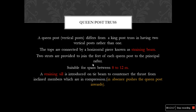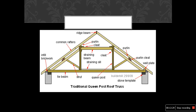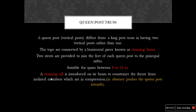Queen post trusses differ from king post trusses in having two vertical posts rather than one. Instead of one king post and strut connecting the rafter, there is a vertical and horizontal member — the vertical member is called the queen post and the horizontal member is called the straining beam. The queen post is connected by means of struts that support the common rafters, and the queen post tie connects the tie beam. This is suitable for spans from 8 to 12 meters. The straining sill is introduced on the tie beam to counteract thrust from the inclined compression members.